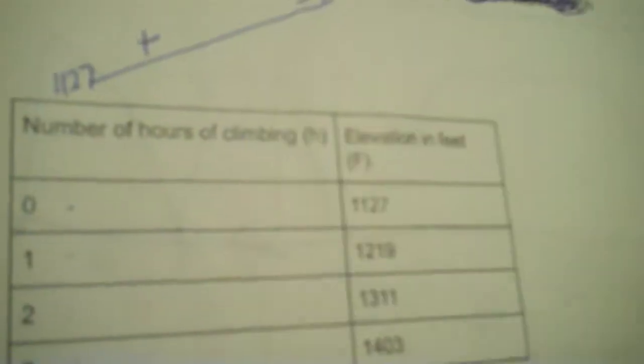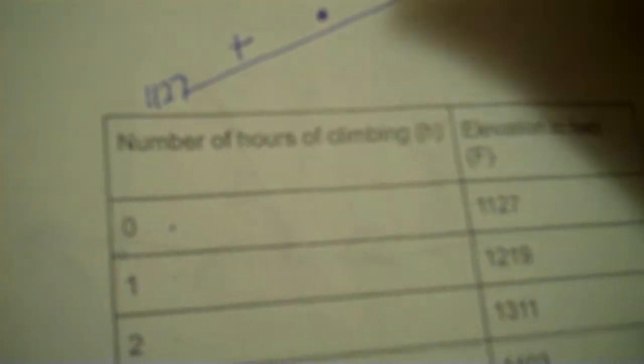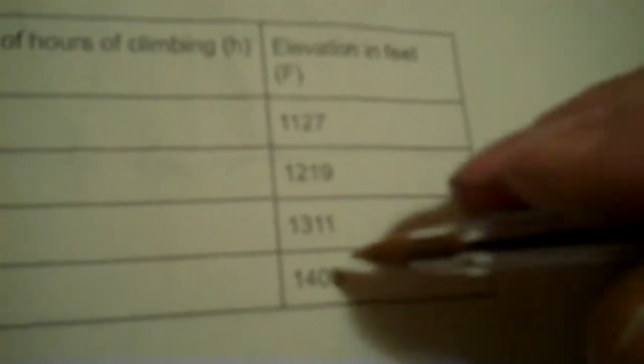Now, what's your F start at? 1,127. Okay? Plus. Okay? But this is the key part. You don't know what number you're going to plus. You're going to put a times. You're not going to put X, so you're going to put H. Times H. Now, here's how we find what the H is. Start at the bottom of the table. Take 1,403, and subtract 1,311. Okay? 92. Put a 92 right there. That means from here to here, it changed by 92 feet. Then go over here and take 3 minus 2, that's 1.